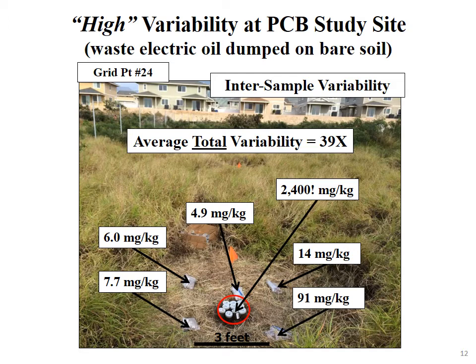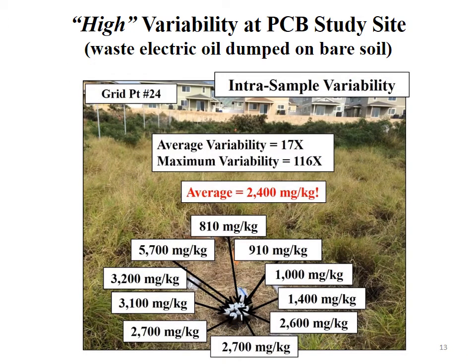Individual discrete samples can be highly misleading and really completely meaningless for that grid point. A key point we also saw at other sites: the variability wasn't necessarily dependent on concentration — we'd see the same degree of variability within individual grid points even when the concentration was down below a ppm or in the ppb level. Looking at this grid point in more detail — the sample split into ten jars — the lowest concentration reported was 810 ppm and the highest was 5,700 ppm, with a mean of 2,400 ppm. The average variability within samples was 17-fold; the maximum variability within a single sample was over 100-fold — and again, this isn't concentration-dependent; we see the same variability at the ppb level.